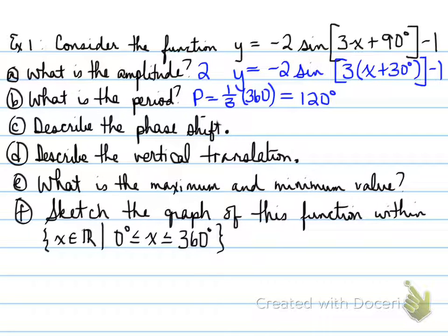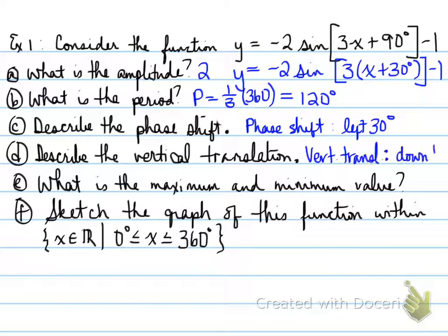Describe the phase shift. The phase shift moves left 30 degrees. Another option instead of left 30, you can write negative 30. So the phase shift will be negative 30 degrees. This is allowed only in sinusoidal functions. And describe the vertical translation. The vertical translation moves down one.